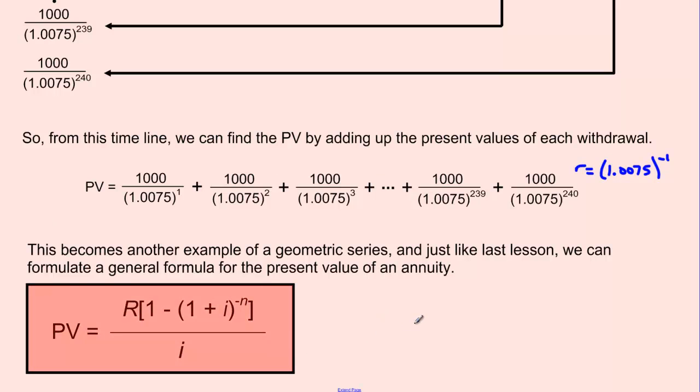And this is what it ends up looking like. Present value equals R, which is your regular withdrawal in this case, times 1 minus 1 plus i to the negative n, all divided by i. This is very similar to the future value of an annuity, or just a regular annuity, and I'll write out that formula here so we can just notice the differences.